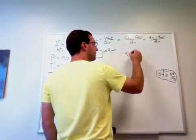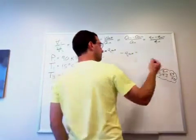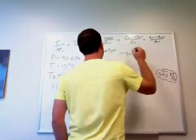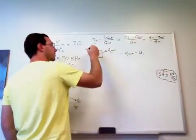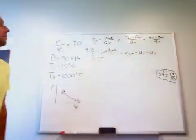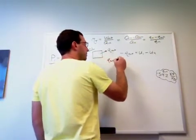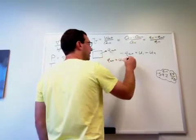Negative Q out equals the change in energy of the system, which would be the final U, that would be U1. We're going from process 4 to 1 here. U1 minus the initial, which we started at 4. So if we solve for Q out, U4 minus U1.